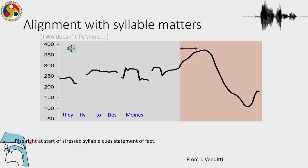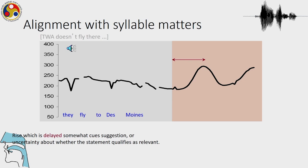One must remember that the F0 contour aligns to syllables — specifically to stressed syllables in a language like English. The rise starts from the stressed syllable. However, the rise can also be delayed, and when that happens it normally implies uncertainty about whether something is possible or relevant — for example, 'They fly to Des Moines' with delayed rise sounds like a suggestion.